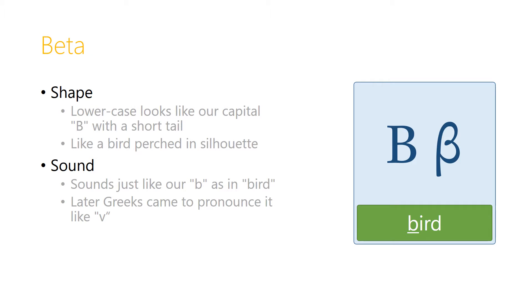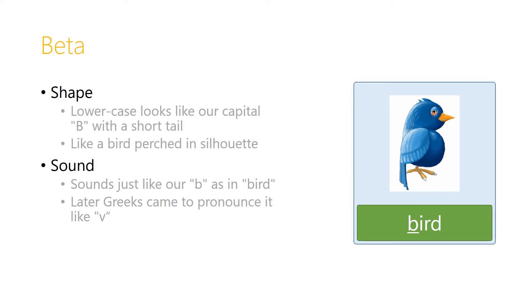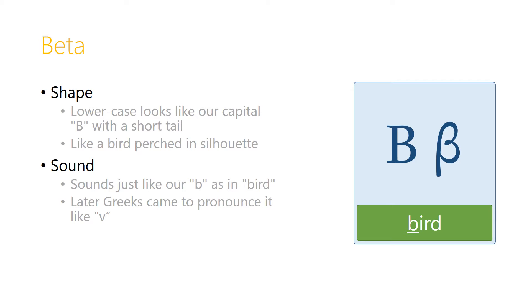The second letter of the Greek alphabet is the letter beta, and the uppercase looks exactly like our letter B. The lowercase actually looks like our uppercase letter in a kind of rounded, almost bubble letter form, but it's still recognizable as a B. It just has a short tail that sticks down below the line, and so it almost looks like a silhouette of a bird perched on a branch — you can see a bird that looks a little bit like the outline of a letter beta. The sound is just like our B, as in bird. In later Greek, it came to be softened to more of a V sound, and so in modern Greek beta is actually pronounced V — Veta. But in the pronunciation that we're learning, we're going to treat it as a B sound.